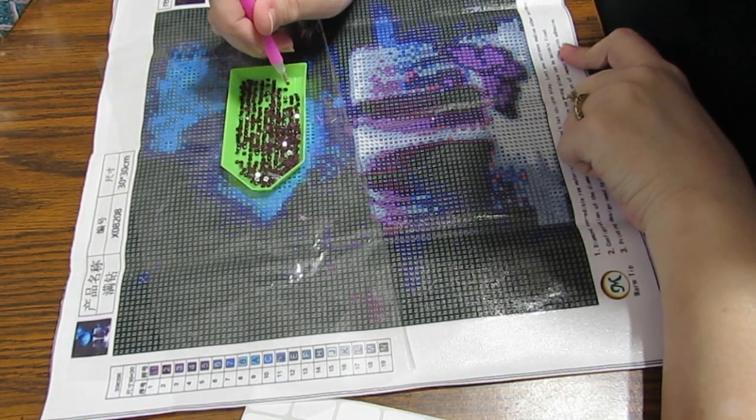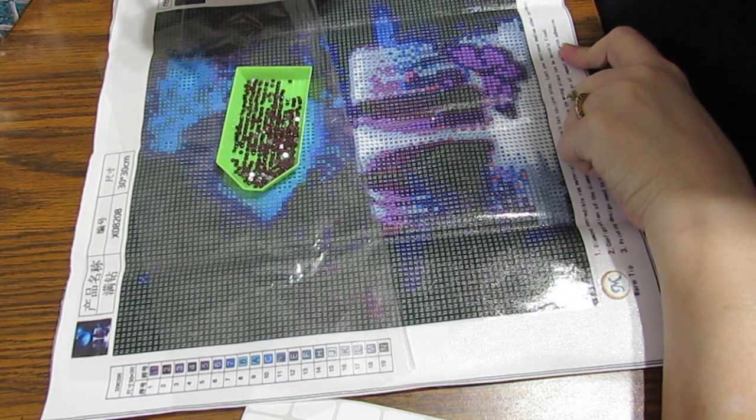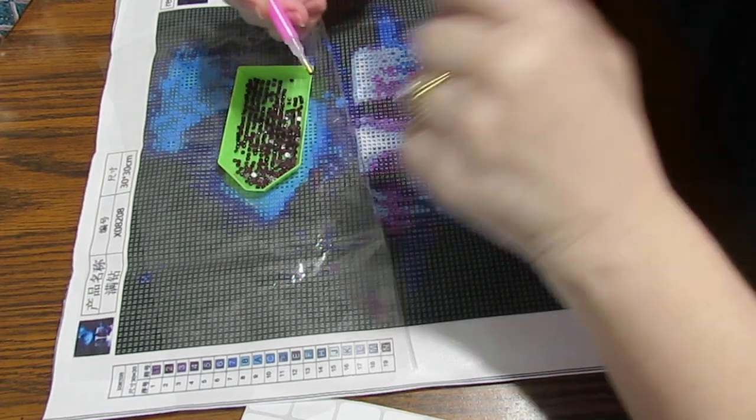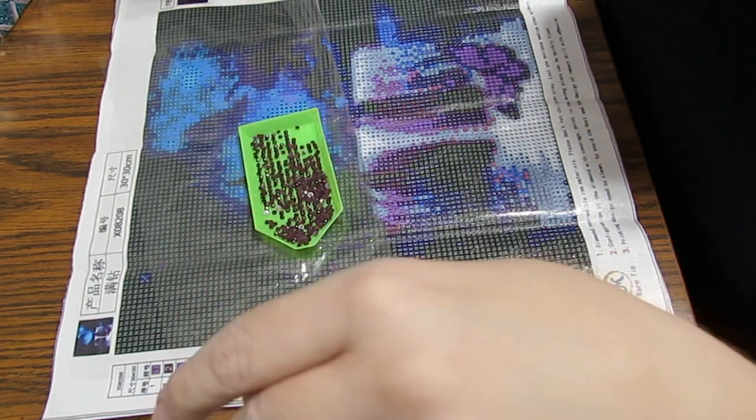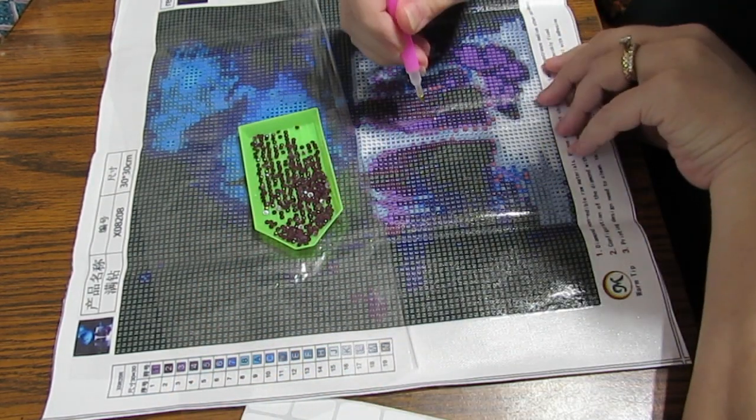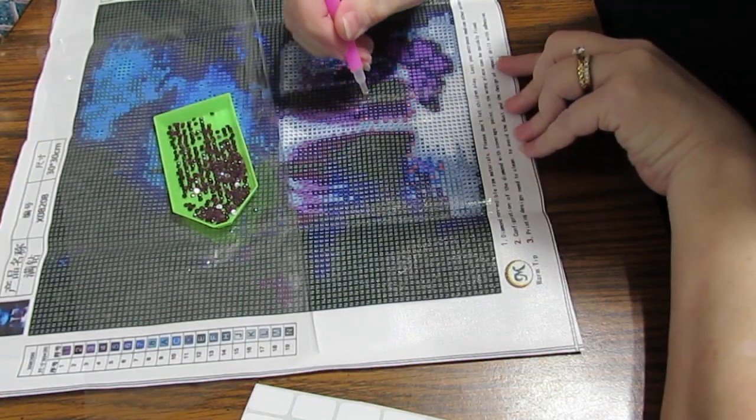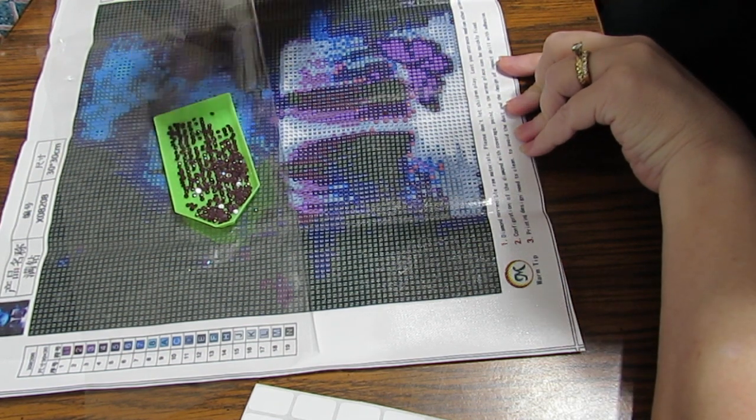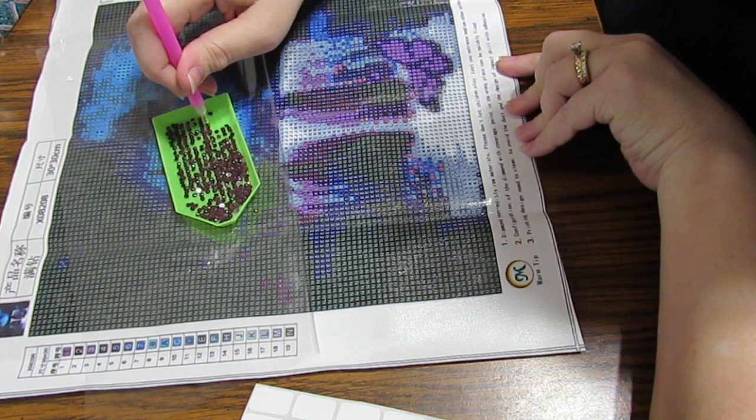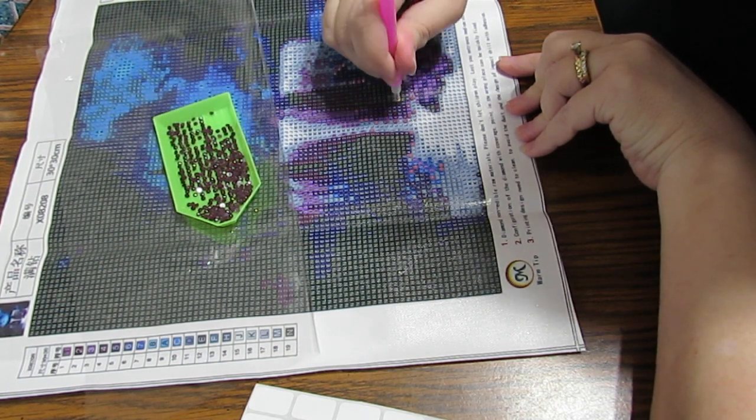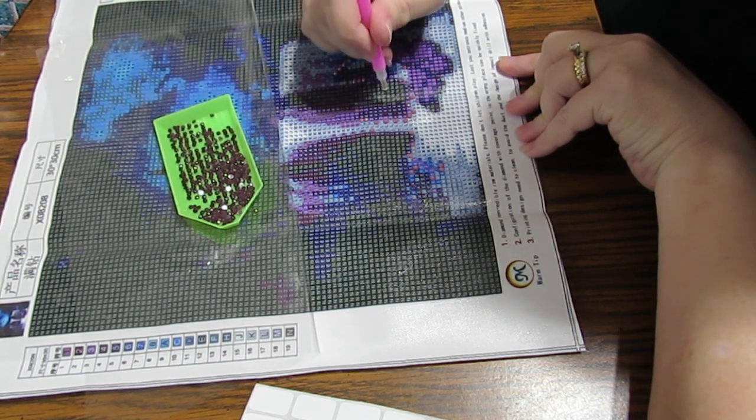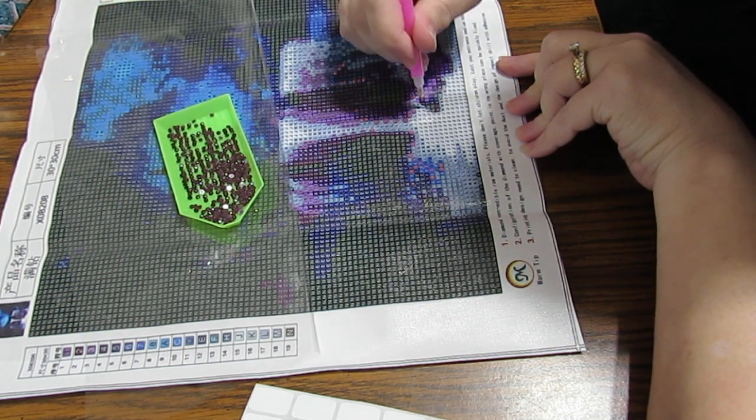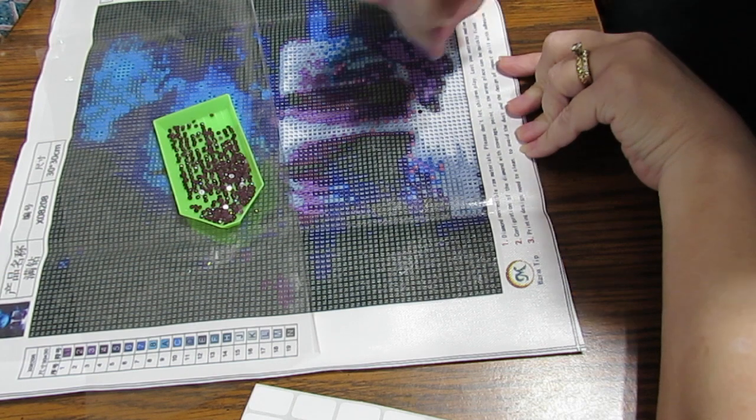If you get to the point that it's not sticking to your pen any longer, if you can't pick up any of the diamonds, that just means you need to put some more wax on it. So let's find some number twos. There's a number two there. And you just go through and you put them on. It's so easy. And you say, oh no, I put it in the wrong place.